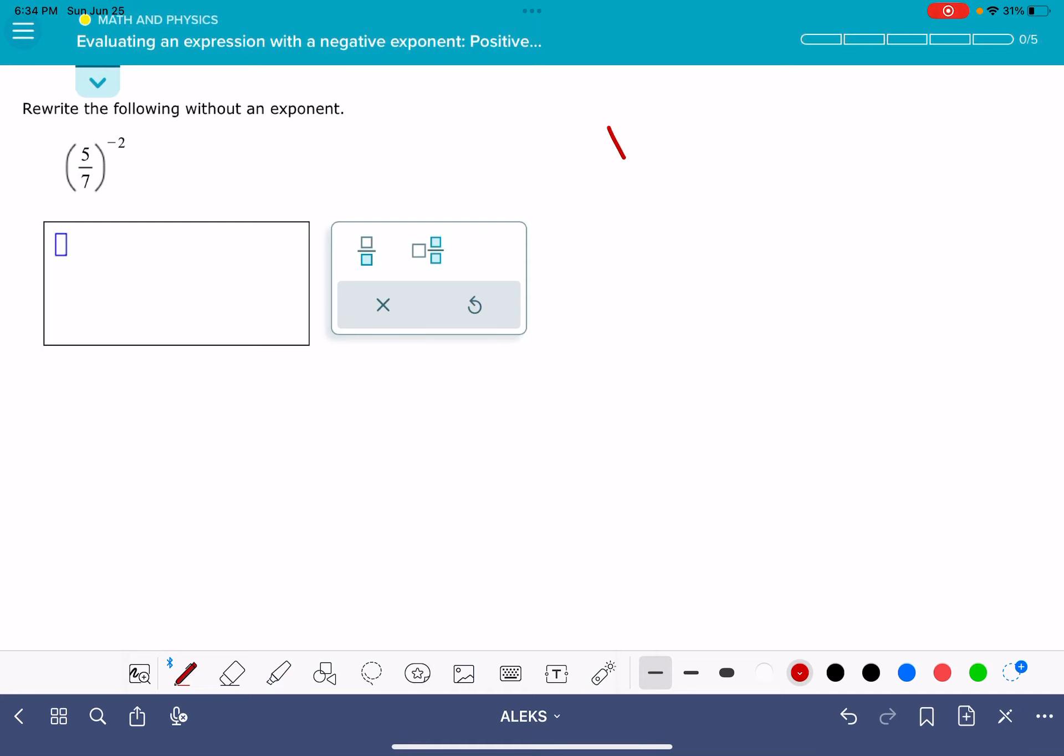So first of all, if you have something to the negative exponent, that is equal to the reciprocal with a positive exponent. So if you have x to the negative y, that's equal to 1 over x to the y.